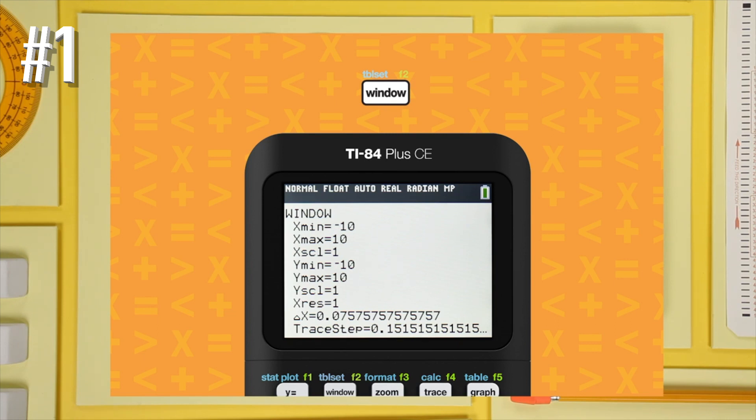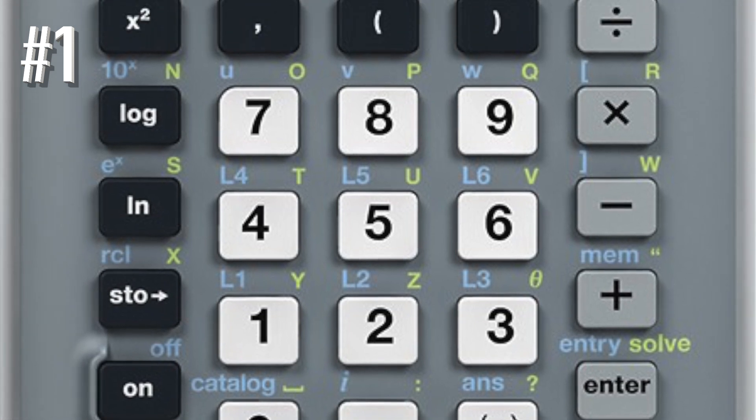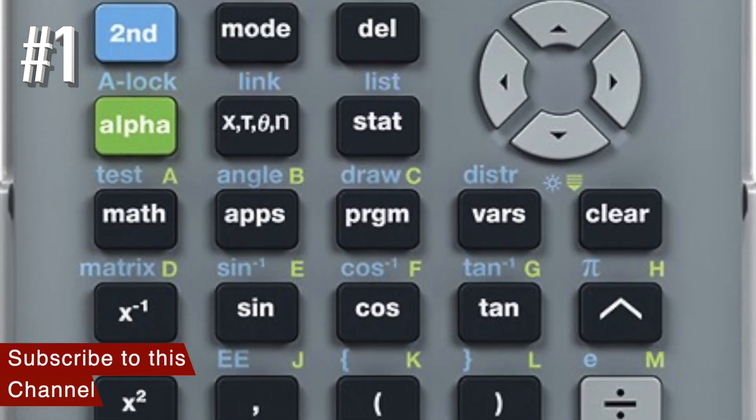The full-color screen enhances the display experience, making graphs easier to read by adding color-coded equations, plots, and objects.